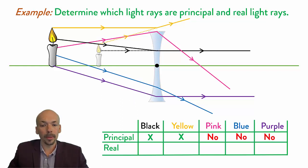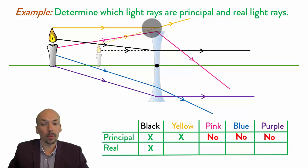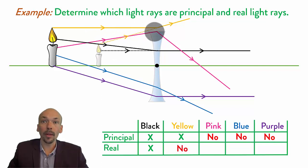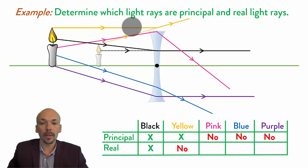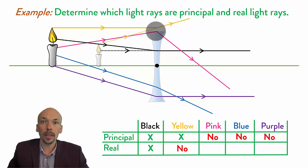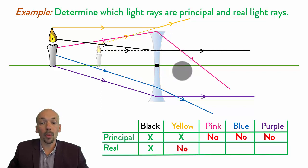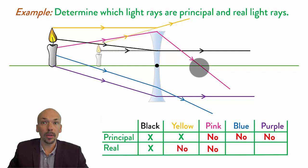Now let's see which light rays are real. The black one is a principal ray and it goes through the lens. So it's also a real one. The yellow one is a principal ray, but it doesn't go through the lens. So this one will actually not be used to construct this image — it's not a real light ray because it's not going through the lens. We did use it to draw this image, but it's not a real light ray because it will just continue unbent since it's not hitting the lens. The pink one is not a real light ray, because this is a diverging lens — it should have been diverted away from the principal axis, but it's now going towards the principal axis. So this is not a real light ray.